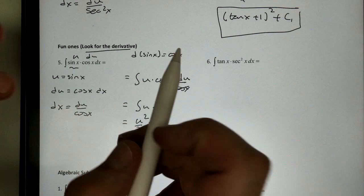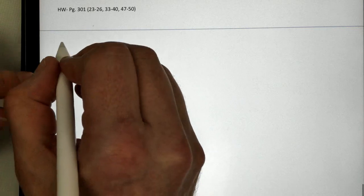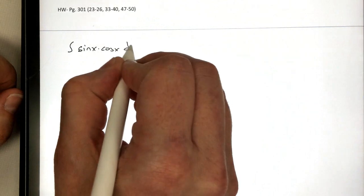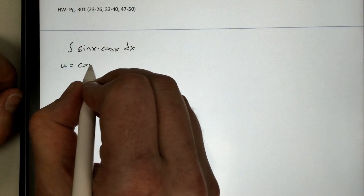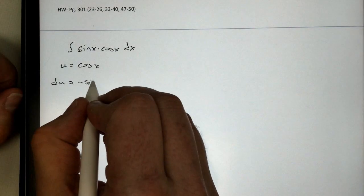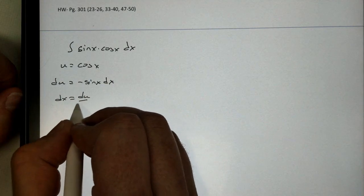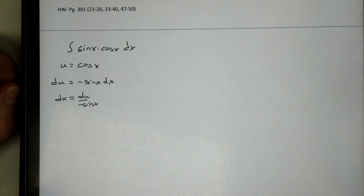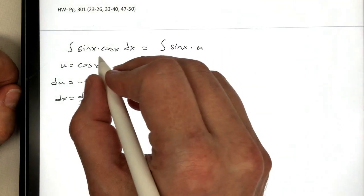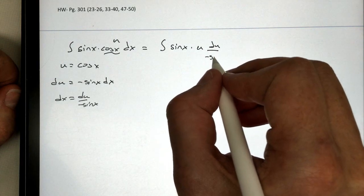Now, you might be wondering, what if we let u be cosine of x? Well, let's see what happens here. Let's try that. Let's look at the same problem. But this time, let u be the cosine of x. Our derivative, the derivative cosine is negative sine of x. Be careful, we're doing derivatives here. dx being du over negative sine of x. If I were to substitute this in, we get sine of x times u. Could we replace cosine with u du over negative sine of x? Sines canceled.